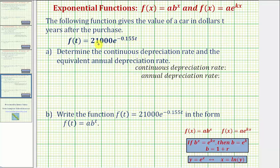Because the given exponential function has base e, or it's in the form a times e raised to the power of kt, by analyzing the function we can determine the starting value of the car, or initial value, which is a. The value of k indicates whether we have exponential growth or decay, and it also indicates the continuous exponential growth or decay rate.